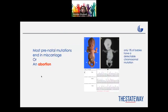Most prenatal mutations end in miscarriage. However, only about 1% of babies have a detectable chromosomal mutation — specifically, only 1% of those maladaptive mutations can be monitored during prenatal screening.